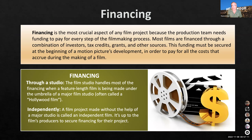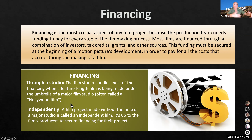Financing is the most crucial aspect of a film project because the production needs money to even begin pre-production. Most films are financed through a combination of investors, tax credits, grants, and other sources. This funding must be secured at the beginning of development. Financing is either through a studio — which handles most of the financing for films made under their umbrella, sometimes called a Hollywood film — or independently, where a film is made without the help of a studio, getting independent funding from various sources.